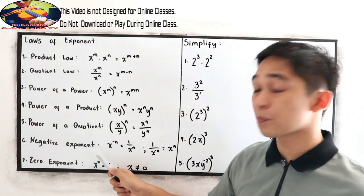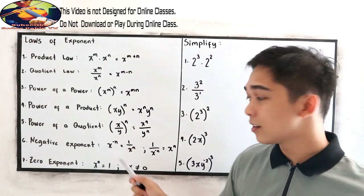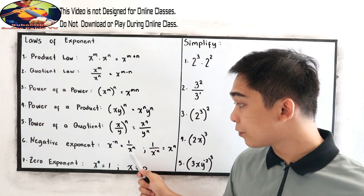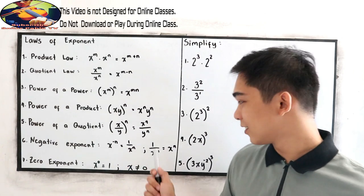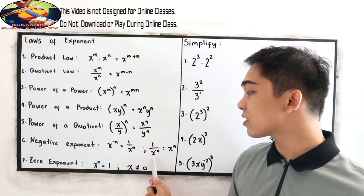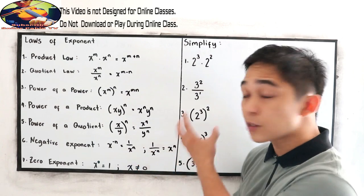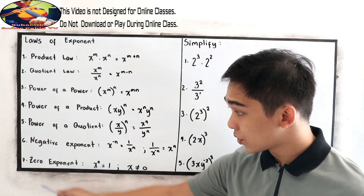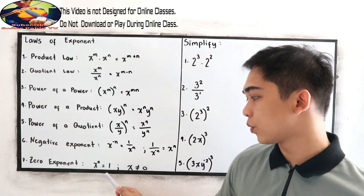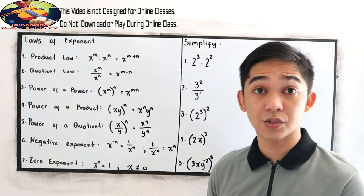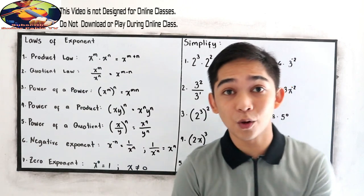The sixth law is the negative exponent. If we have x raised to negative n, that is equal to 1 over x raised to n. Conversely, 1 over x raised to n equals x raised to n. The seventh law is the zero exponent: x raised to 0 is equal to 1. Any number raised to 0, except 0 itself, equals 1.